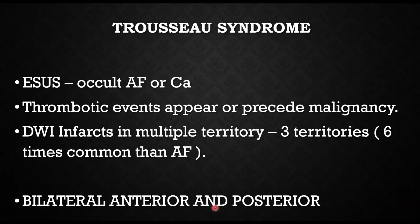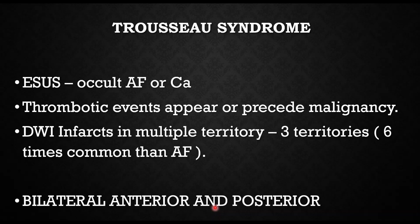Trousseau syndrome refers to thrombotic events that appear along with malignancy or precede it. The Three Territory Sign is very important in diagnosing Trousseau syndrome — the three territories are bilateral anterior and posterior. This sign is six times more common in cancer-associated stroke than in atrial fibrillation, giving it fairly good diagnostic value.